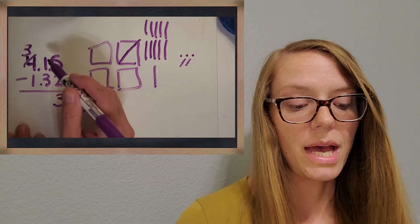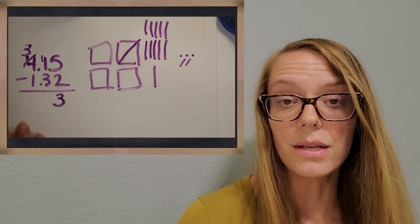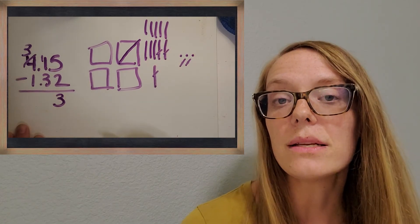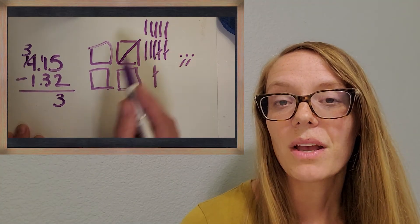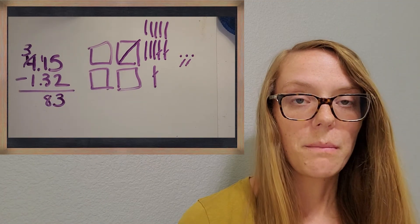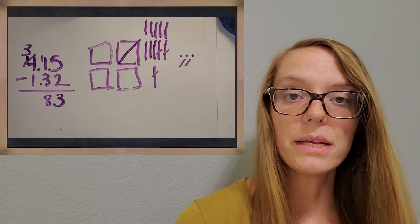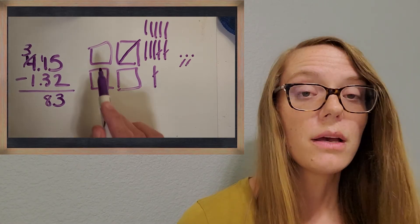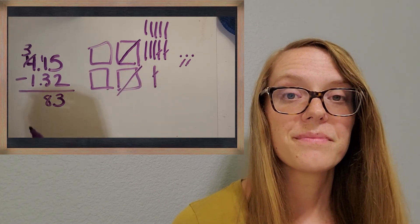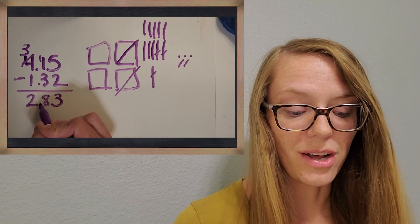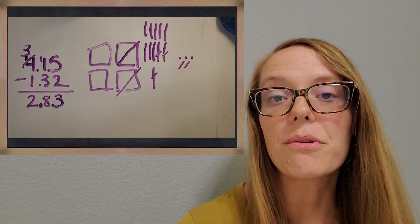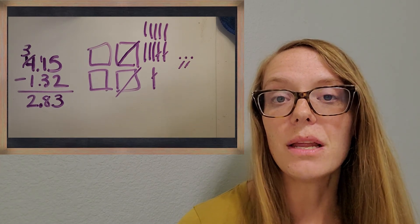So let me do that. Now I've got 11 longs — I can take away 3. What would 11 minus 3 be? Awesome, you got 8. Then let me go over to my biggest place value. I've got 3 left and I need to take away 1. How much do I have now? 2 whole. So I've got 2 and 83 hundredths. Great job with that regrouping — I'm glad the base 10 blocks could help us.